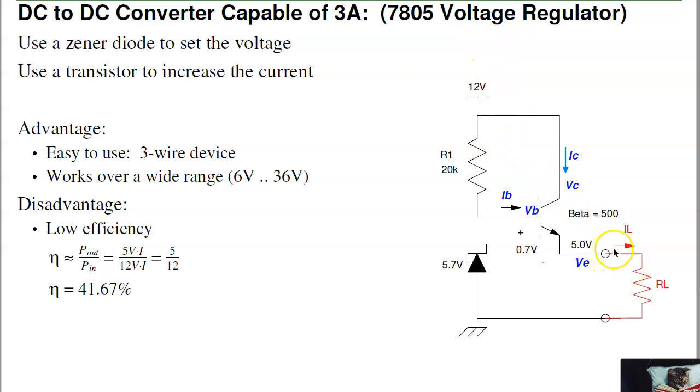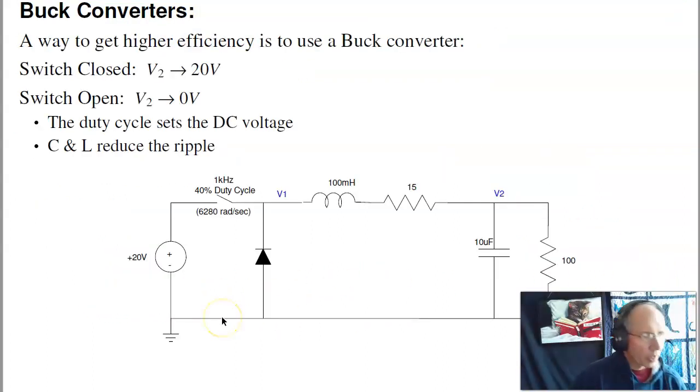Again, if I want to draw 1 amp at the output, I've got 5 volts at 1 amp, 5 watts coming out. The power comes from here. If I have 1 amp going out, I've got 1 amp coming in. 12 volts at 1 amp is 12 watts coming in, 5 watts going out. Once again, I'm 41% efficient. If you want increased efficiency, that's where you need a buck converter.